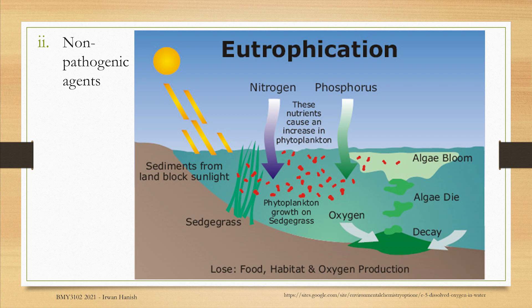Eutrophication can occur naturally — it's like a normal aging process for aquatic ecosystems, but that usually takes a long time. What concerns us more is that humans eutrophicate bodies of water through immoral industrial and agricultural practices, such as when people dump waste from their factories or farms into lakes or rivers. Pay attention to this when you're working in industries in the future, and do your best to stop your company from doing this.